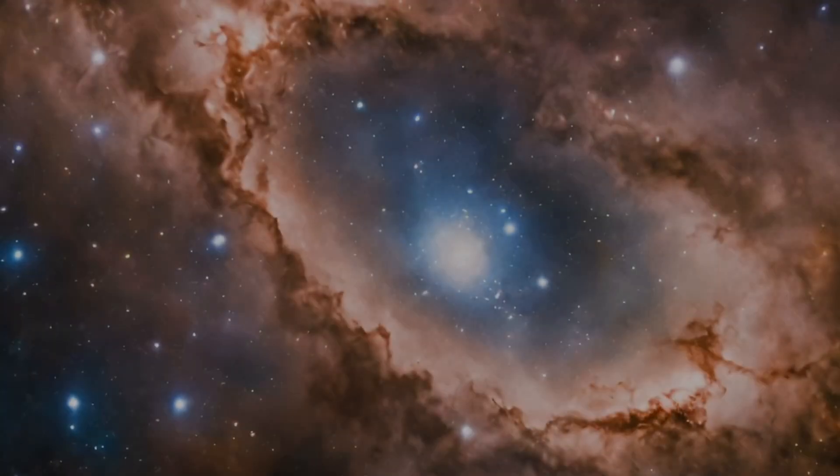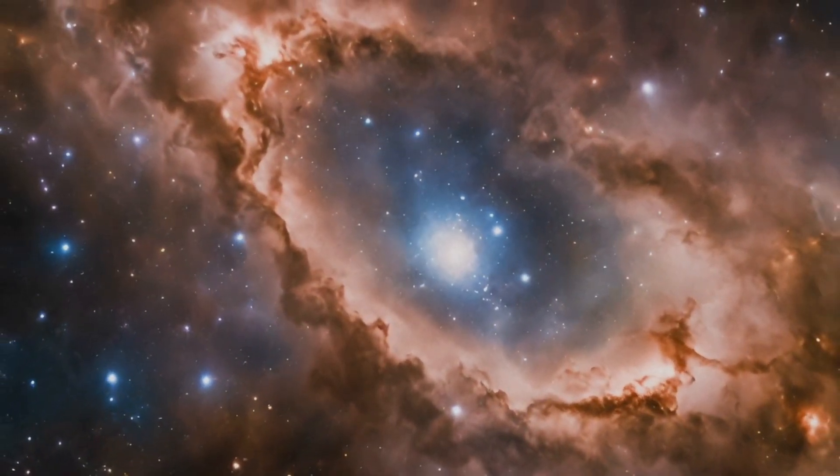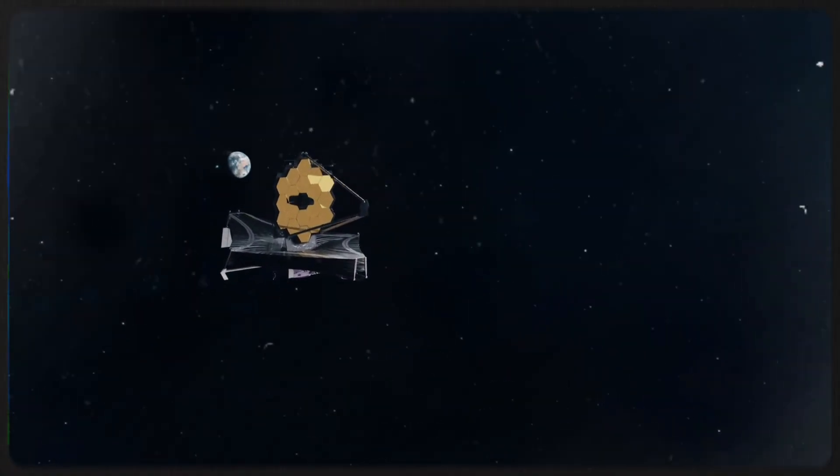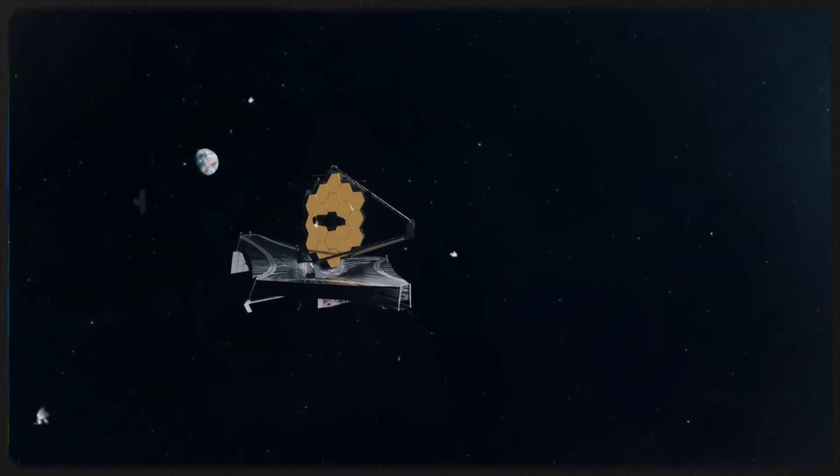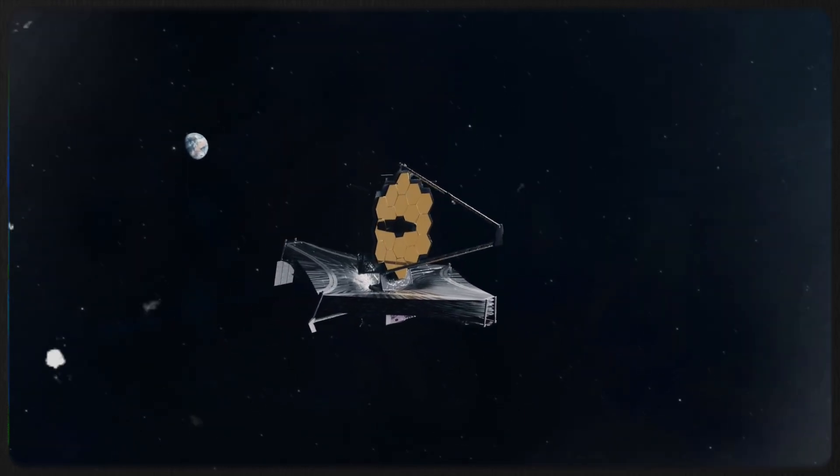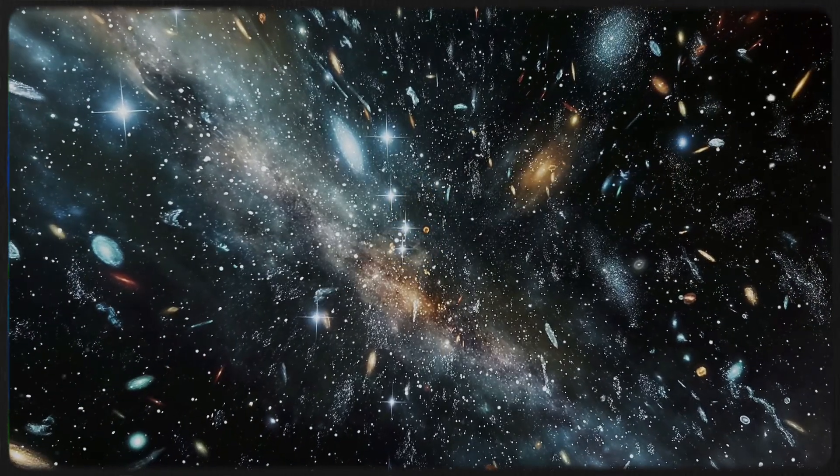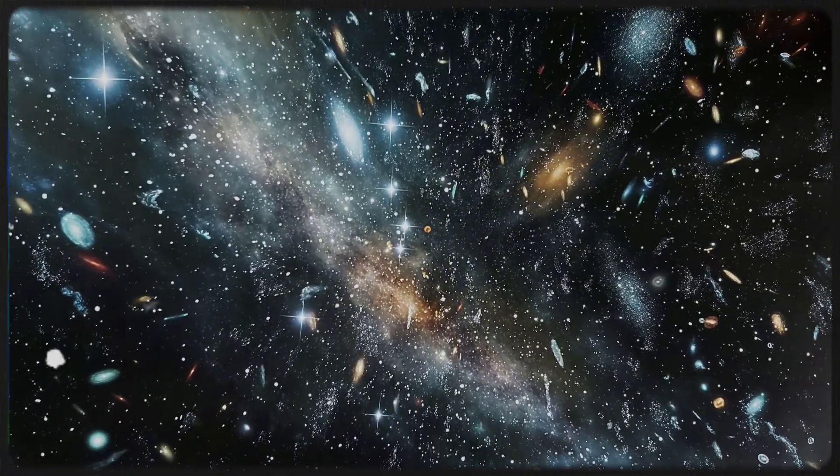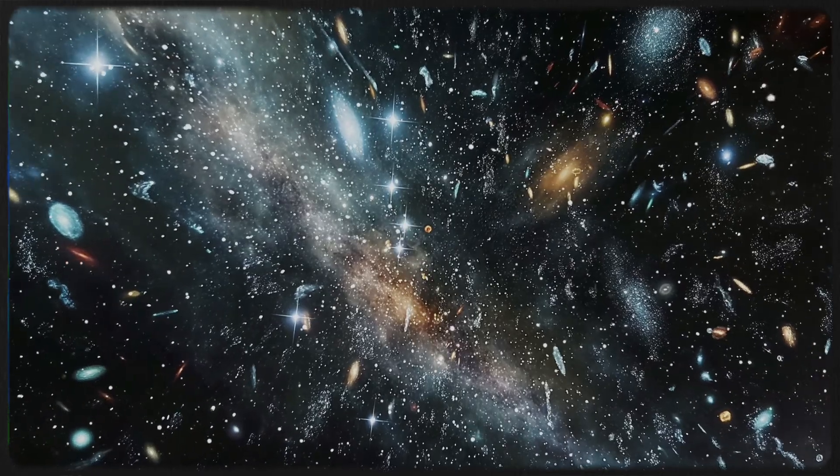Hold on to your space helmets, because this next discovery is shaking up everything we thought we knew about the universe. The James Webb Space Telescope has been blowing our minds with stunning views of the early universe. But here's the twist. Instead of spotting tiny baby galaxies just starting to form, it's showing us massive, mature galaxies that shouldn't even exist that early in cosmic history.